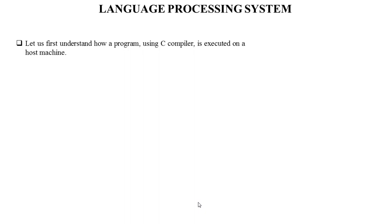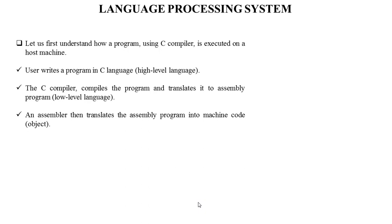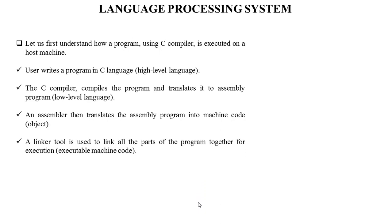Let us understand how a program using a C compiler is executed on a host machine. First, the user writes a program in C language, that is high-level language. The C compiler then compiles the program and translates it into assembly language, that is low-level language. An assembler then translates the assembly program into machine code, that is the object or target program. A linker tool links all parts of the program together for execution, and then a loader loads them into memory for execution.